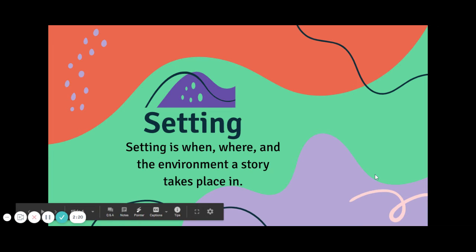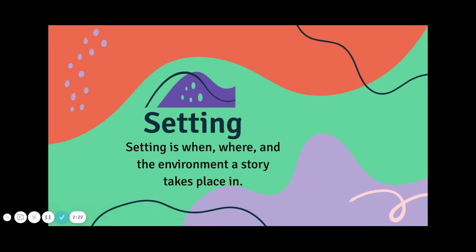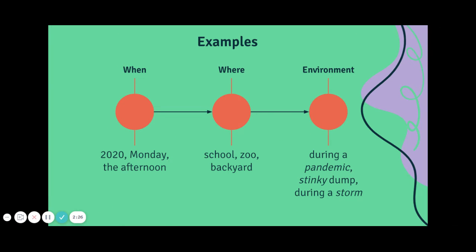All right, next — remember we have our setting, which is time and place: the when, the where, and even the environment that our story takes place. Don't forget the when is our time — is it a year, a day, in the afternoon? Where tells us the place that it took place — the school, the zoo, in the backyard.